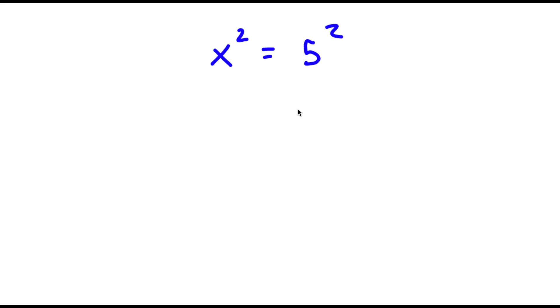Alright, so I have x to the power of 2 is equal to 5 to the power of 2. Now, to solve this problem, I actually have two different methods.